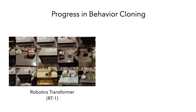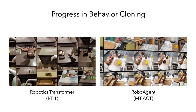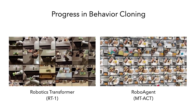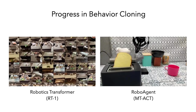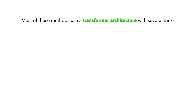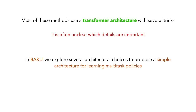Lately, there have been works such as Robotics Transformer and RoboAgent which propose architectures for large-scale multitask robot learning. Most of these methods use a transformer architecture with several tricks and it is often unclear which of these details in these architectures are important. In Baku, we explore a wide range of architecture choices for multitask robot learning and, through extensive experiments, propose a simple architecture for learning such multitask policies.